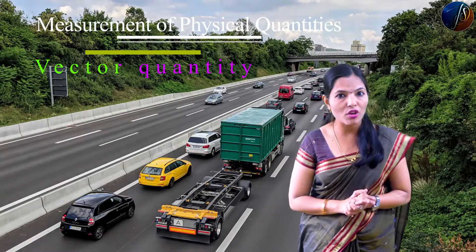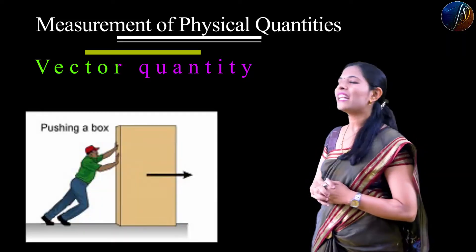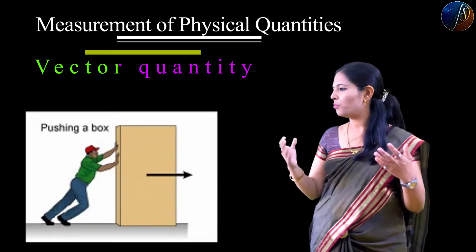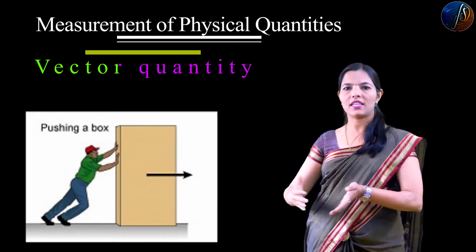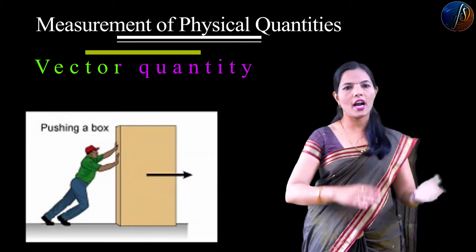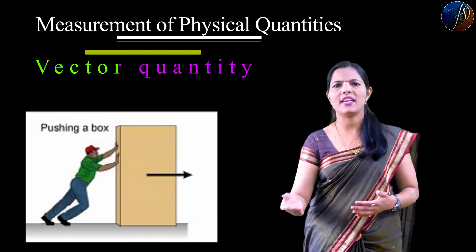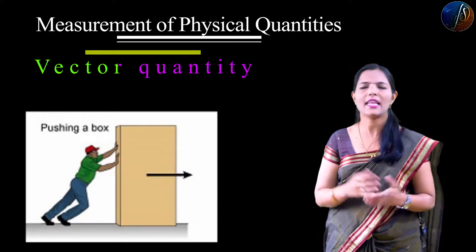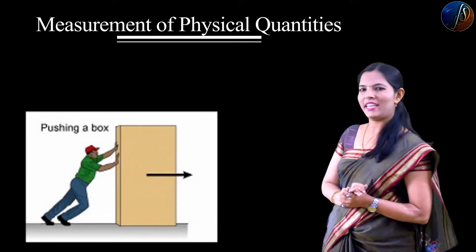Which are the examples of vector quantity? Displacement is an example of vector quantity. We also have velocity as a vector quantity — both displacement and velocity require a direction to be fully described.